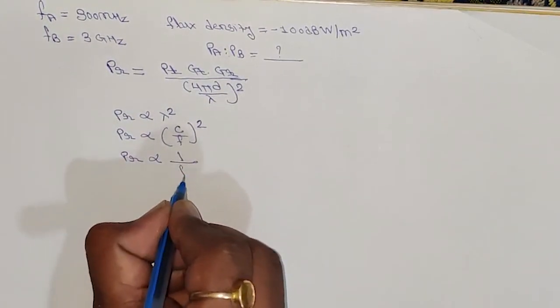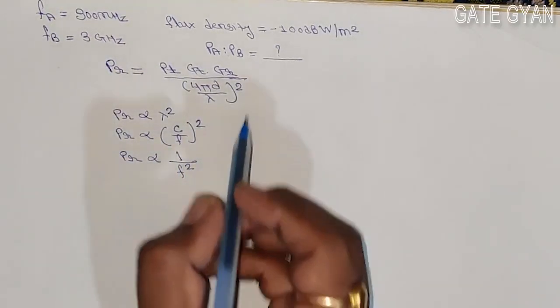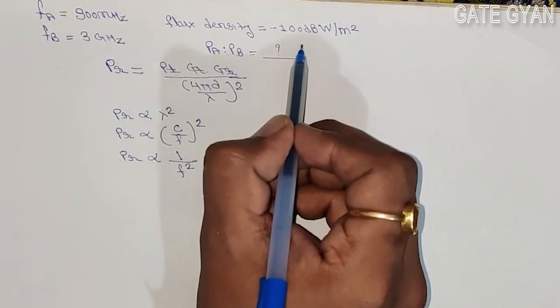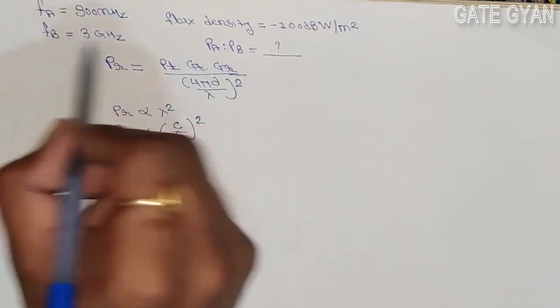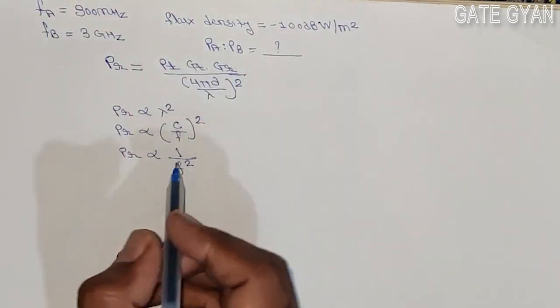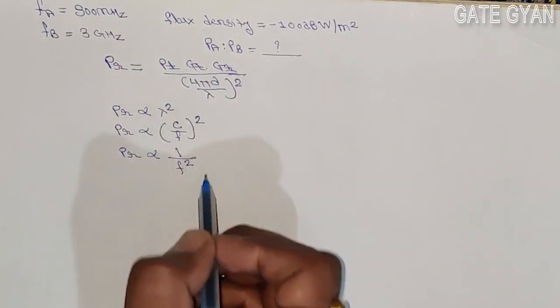We have found this relation. The flux density is given and it is said that it is identical for both antennas. So we do not have to consider this flux density. We only consider the frequency.